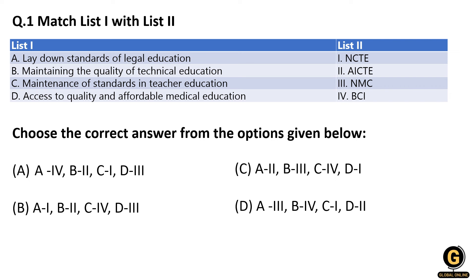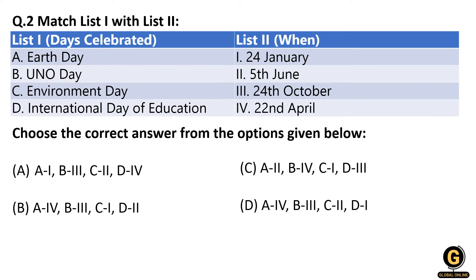Since we are preparing for UGC NET, we know teacher education standards are maintained by the National Council for Teacher Education. So C–1 is the correct pair. Only option A has both C–1 and D–3, so our correct answer is A. 'Lay down the standards of legal education' is looked after by the Bar Council of India, and 'maintaining quality of technical education' is handled by AICTE.